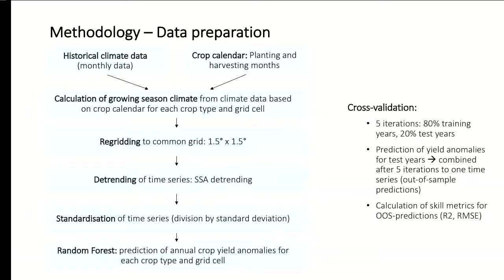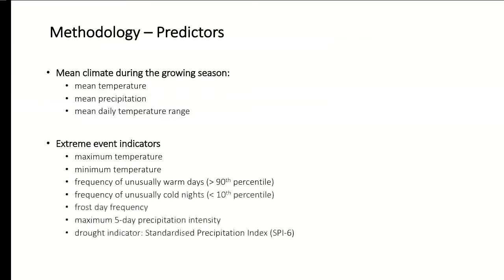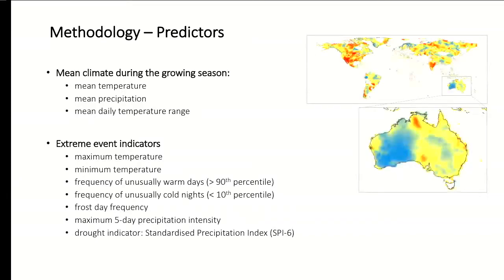We standardized the time series relative to their standard deviation and applied the random forest algorithm on these anomalies to predict crop yield anomalies for every grid cell — whether above or below average — based on anomalies of precipitation, temperature, and so on. We did a cross-validation, leaving out 20% of years and training on 80%, repeated five times. Our predictor variables include mean temperature, mean precipitation, temperature range, heat extremes, frost extremes, frequency of unusually warm days (above 90th percentile), and unusually cold nights — all as global gridded data over 47 years.